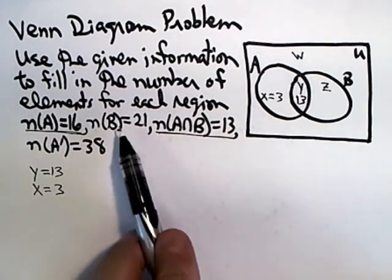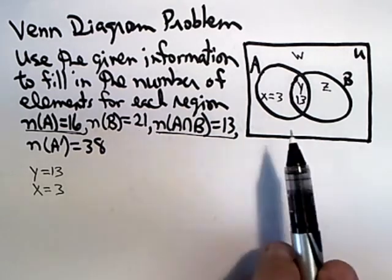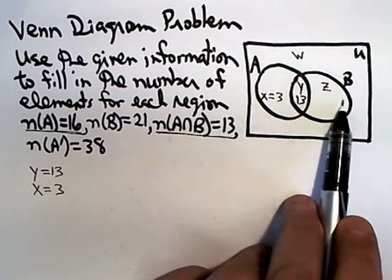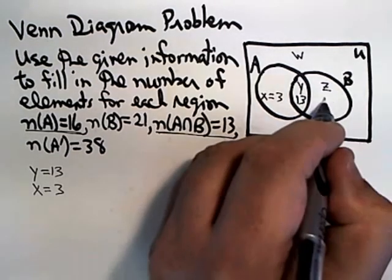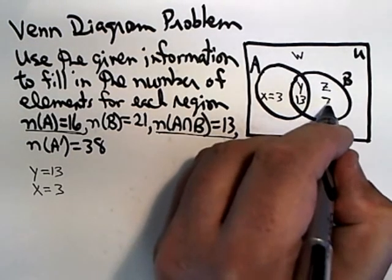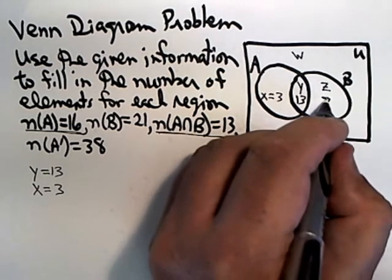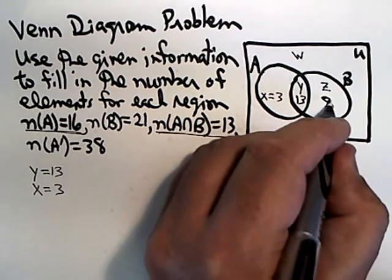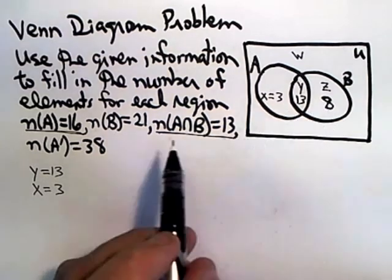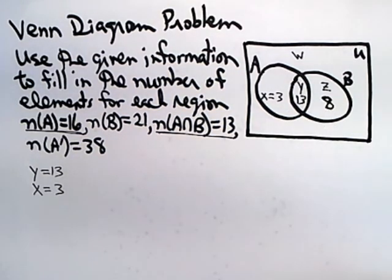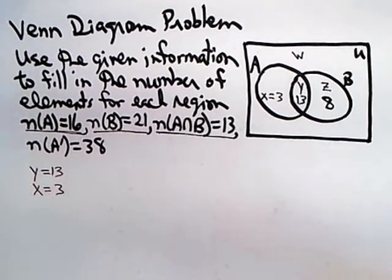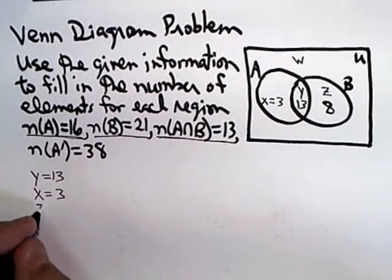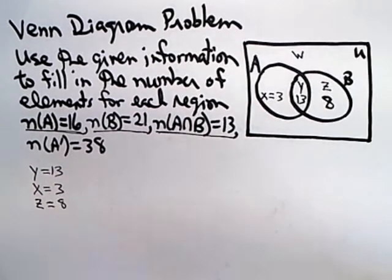Using that same logic, we also know the number of elements in set B is 21. Since 13 of them are already in set B and are labeled, the rest of them must add up to 21. So, 13 plus 7—whoa, 13 plus 8 gives me 21. Be careful with your arithmetic; one little slip like that can cause you to miss the entire problem. So 13 plus 8 is 21, and we've just discovered that Z equals 8.